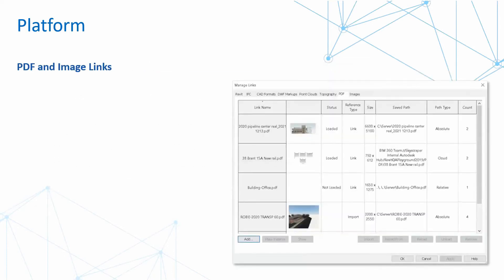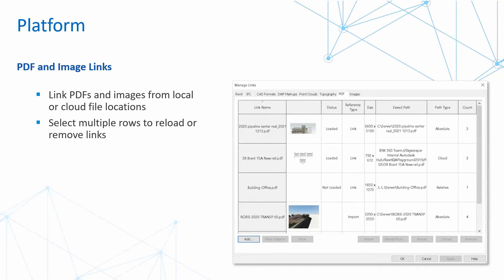One of the favorite new features is PDF and image links. We now have the ability to link PDFs and images from local or cloud file locations — the new feature being the cloud file locations. For those of you using BIM 360 Docs and Design, you can now store your PDF and image data in your hub and link directly into your Revit project. You can also select multiple rows to reload or remove links, which is great because in the past you had to do this one at a time.